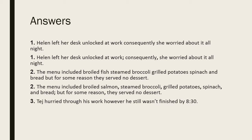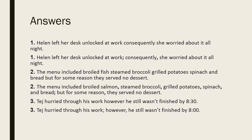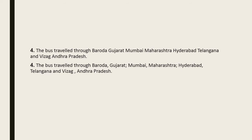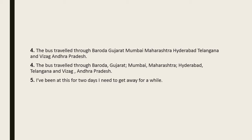'Tej hurried through his work; however, he still wasn't finished by 8:30.' Again a conjunctive adverb, so a semicolon is inserted after the first clause. 'The bus travelled through Baroda, Gujarat; Mumbai, Maharashtra; Hyderabad, Telangana; Vizag, Andhra Pradesh.' Here items contain commas separating city from state, so semicolons separate the groups. 'I have been at this for two days; I need to get away for a while.' Two independent clauses with no conjunction — separated by a semicolon.